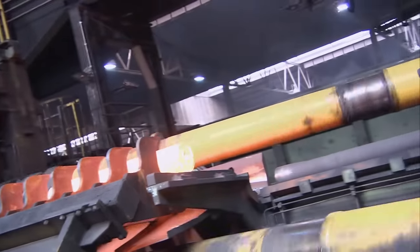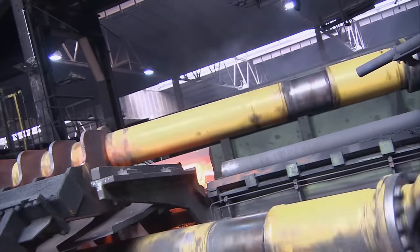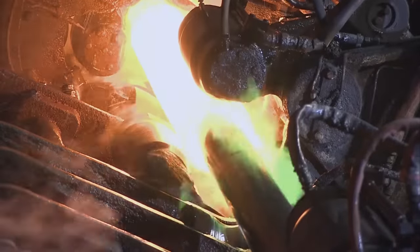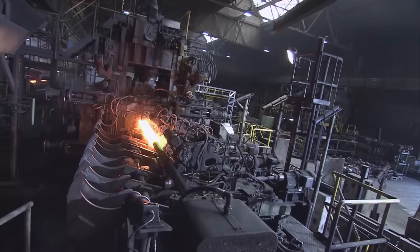The solid round billets enter the Disha piercing mill. Roles set at an angle to each other feed the billets over an internal piercer at a speed of one meter per second, turning them into tube shells.